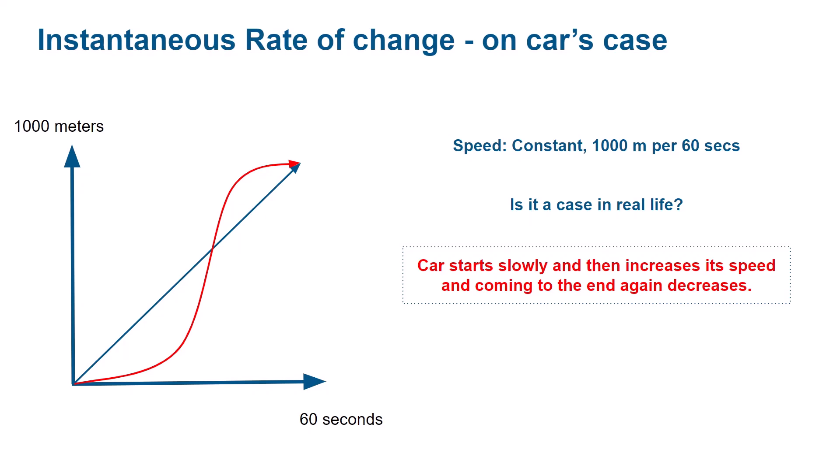So if someone asks you what are the differences in the rate of change at points A and B, what would you say? How would you compare them? It's obvious that at point B the rate of change is higher than at point A. But how to read easily with visualization?